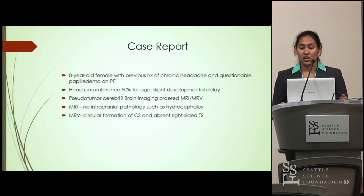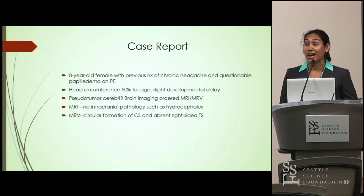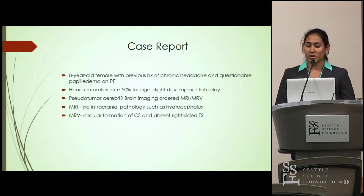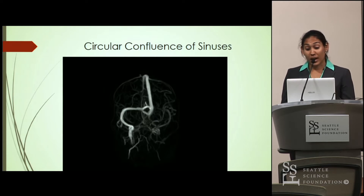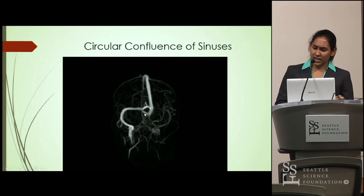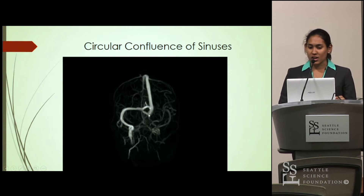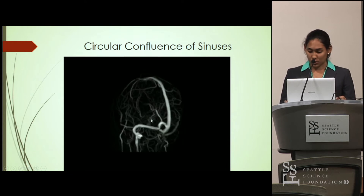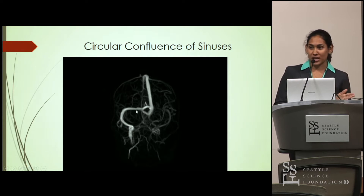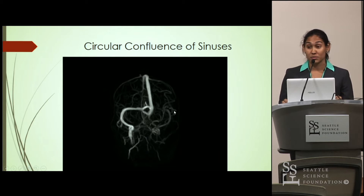They did some brain imaging and performed an MRI and an MRV. The MRI showed no intracranial pathology and no hydrocephalus, but the MRV showed a circular formation of the confluence of sinuses, which no one has really ever seen before, as well as a known variation — an absent right-sided transverse sinus. You can see the superior sagittal sinus draining into this roundabout or circular tube-like confluence of sinuses, the straight sinus coming in as well, the occipital sinus below, and one transverse sinus on the left side, but no transverse sinus on the right side.